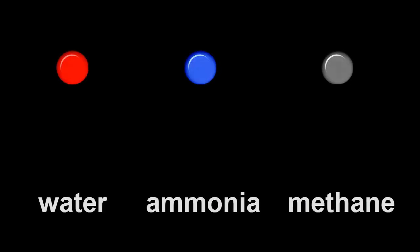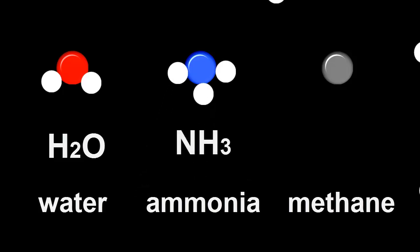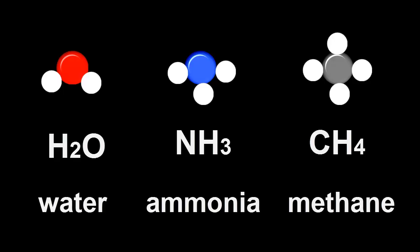Water, ammonia, and methane are all important substances. Water is made when hydrogen bonds to oxygen, ammonia when hydrogen bonds to nitrogen, and methane when hydrogen bonds to carbon. Try to remember their names and formulas.